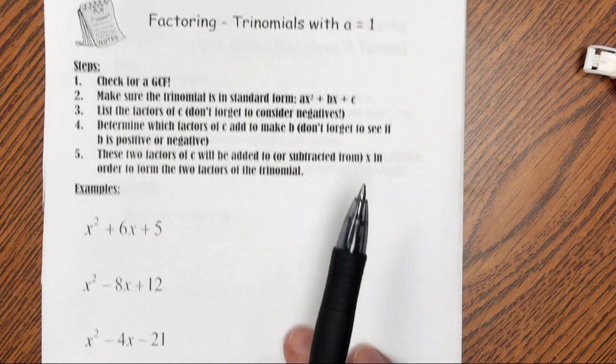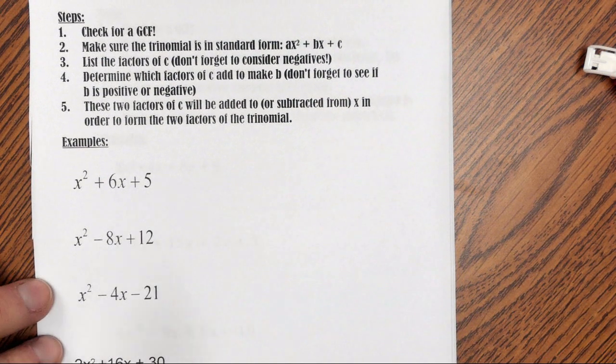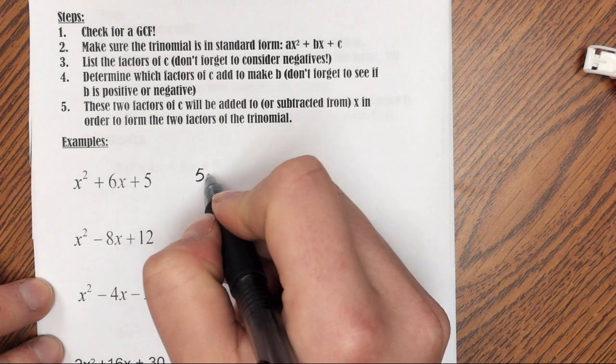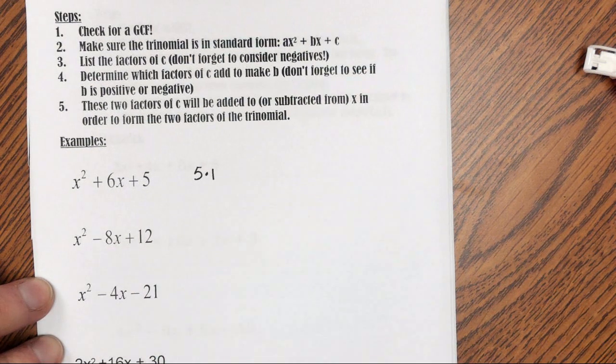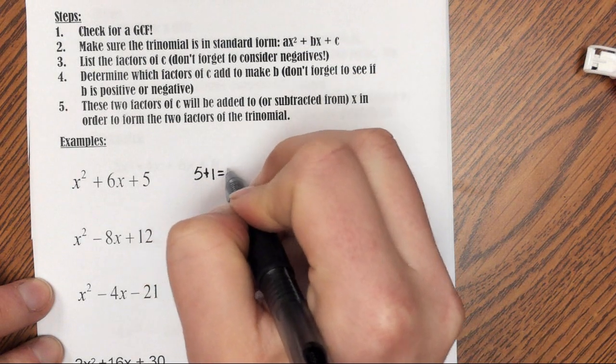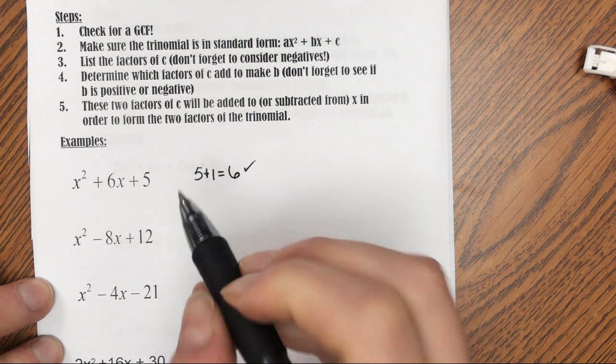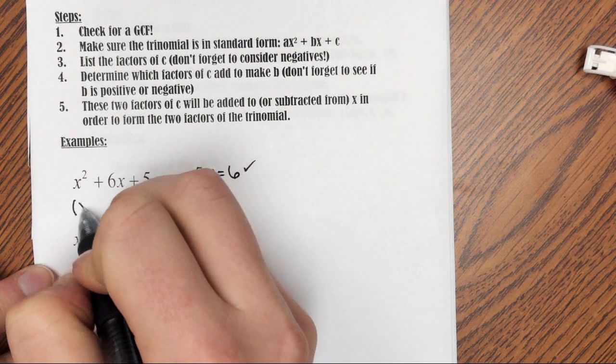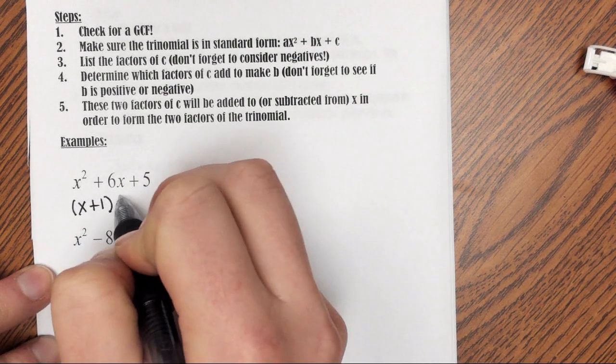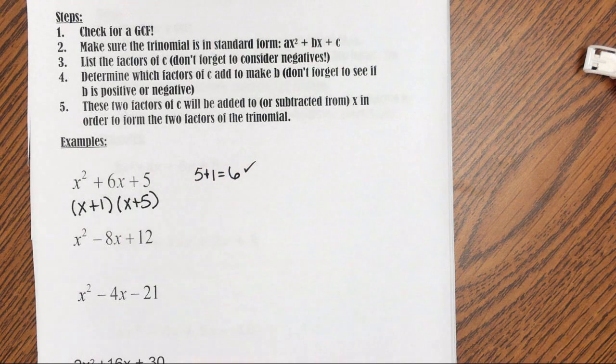So example 1. I need the factors of 5 that add to be 6. So my factors of 5, I have 5 times 1, and that's it, 5 and 1. I want to check to make sure that they add up to be 6, and they do. So my final answer is going to be x plus 1 times x plus 5. Either one of those would be correct. Commutative property says they can be in either order.